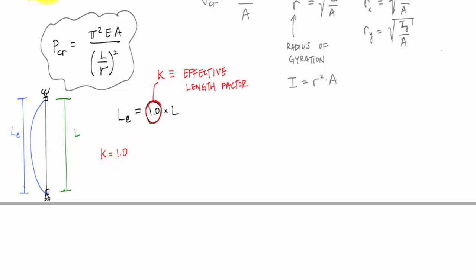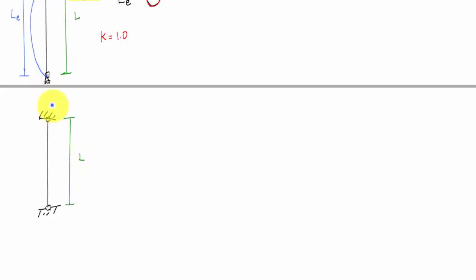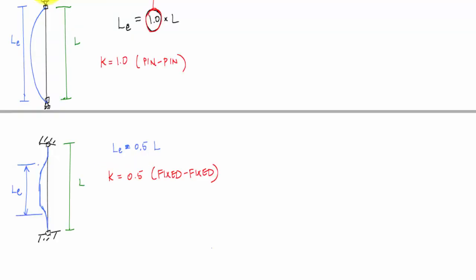If I have a fixed-fixed column, the buckle shape will look something like this. And from inflection point to inflection point, L sub E is about 0.5. And that would suggest that K for a fixed-fixed column is 0.5. Here are the other ones that you might want to consider.